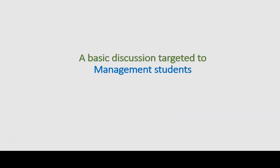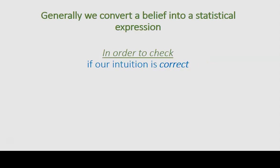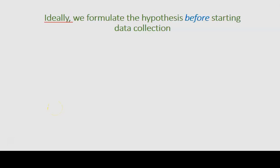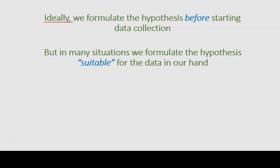This is a very basic discussion targeted to management students. We discussed in the first part about the belief that is converted into a statistical expression in order to check if our intuition is correct — that ideally we formulate both the null hypothesis and alternative hypothesis before starting data collection. But sometimes the hypothesis can also be formulated when we have a large number of data in hand, and we therefore find a suitable hypothesis for the data already collected.